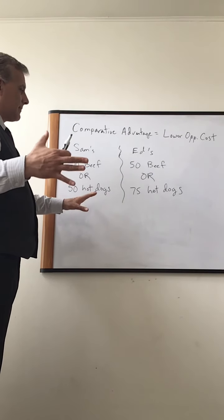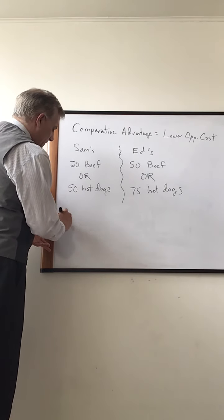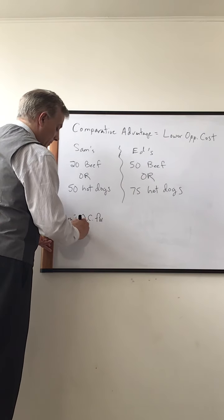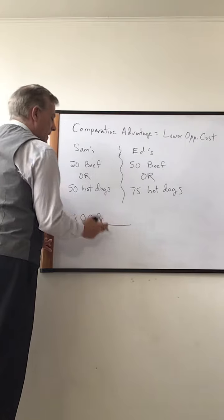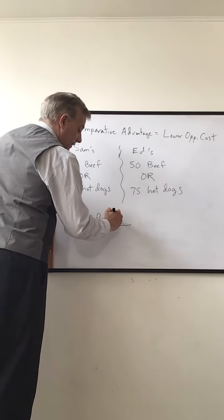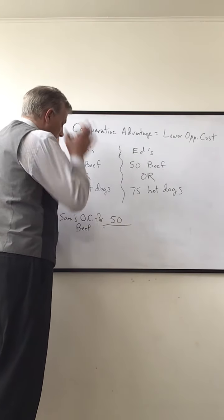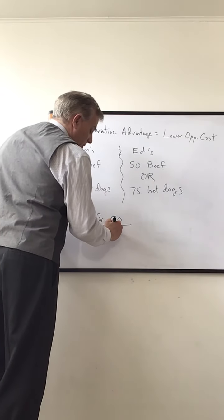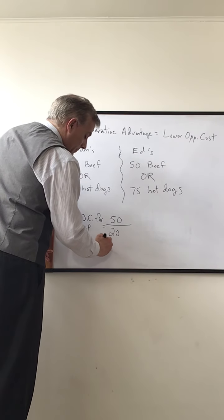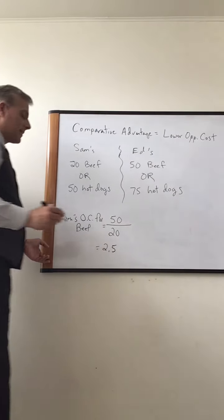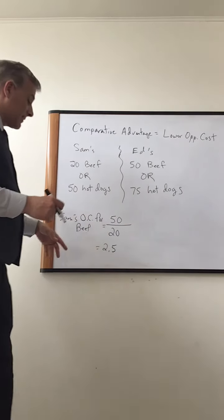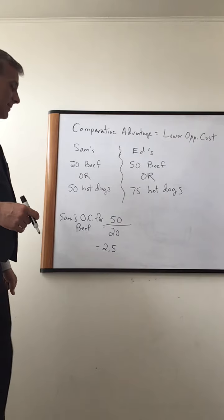So how do we calculate opportunity cost? Well, if we have Sam's opportunity cost for beef. Okay. Well, Sam's opportunity cost for beef equals the amount forgone. What are we not doing? We're not doing hot dogs. That's the opportunity cost of beef is 50 hot dogs over what we're doing, which is the beef. So 50 over 20. So Sam's opportunity cost for beef is 2.5 hot dogs. Meaning every beef sandwich he makes, assuming it's constant opportunity cost, has an opportunity cost of 2.5 hot dogs.